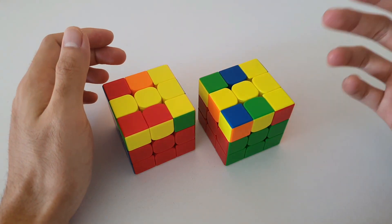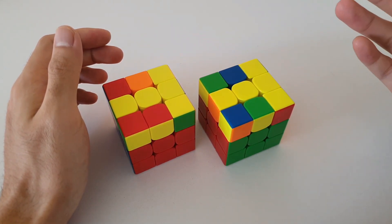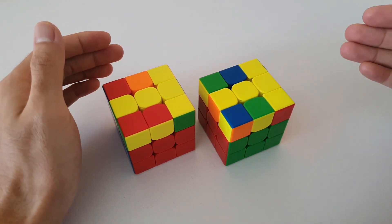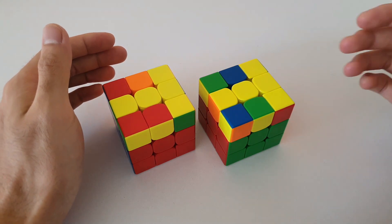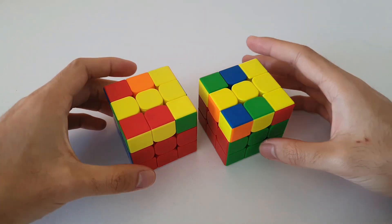I also want to mention that I assume you already know how to do two look OLL and so in these videos I'm going to go straight into the full OLL cases. So starting with the T cases, there are two different T cases as you can see here.